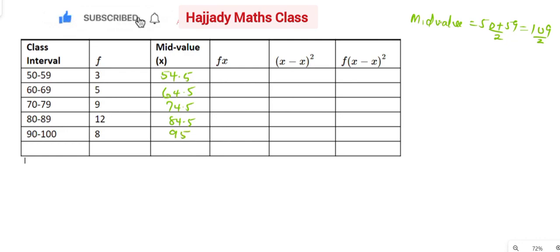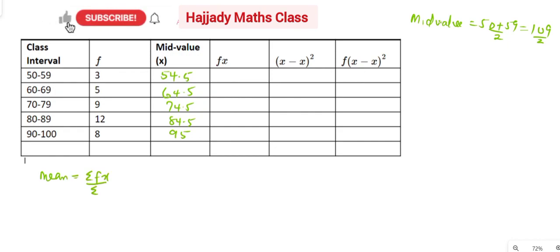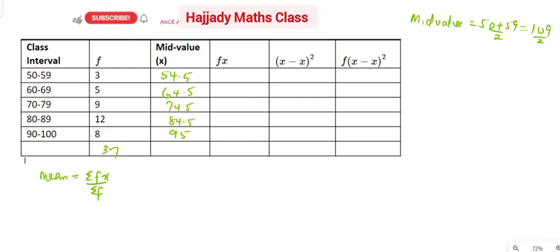Looking at our frequency: to calculate the mean for grouped data, our formula is summation f·x over summation f. We need to find the summation of our frequency, which is 3 plus 5 plus 9 plus 12 plus 8, and that gives us 37.